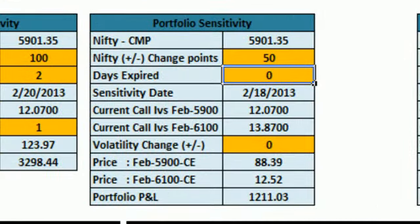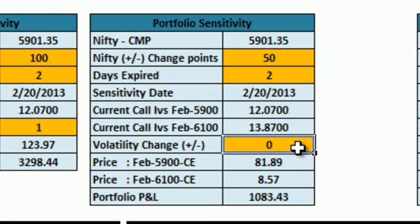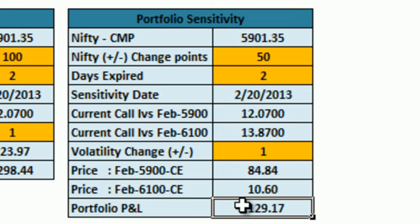Plus we have a new feature which is Portfolio Sensitivity Analysis. In this part you just need to punch in three data points: the probable movement in Nifty which you foresee — plus or minus — the number of days you see this movement occurring, and the fall or rise in IVs as expected by you. Once you punch in all these three data points, you get a probable profit or loss which will help you to take your decisions and trade wisely.